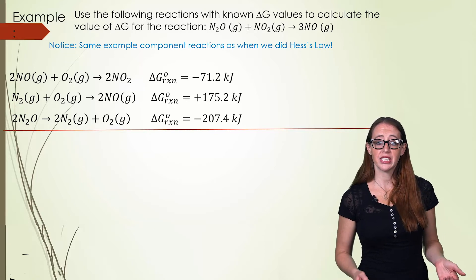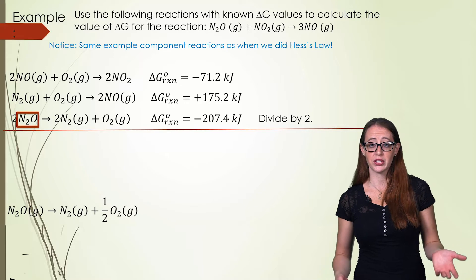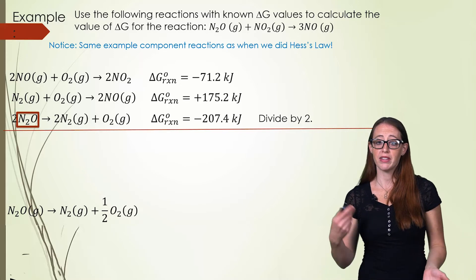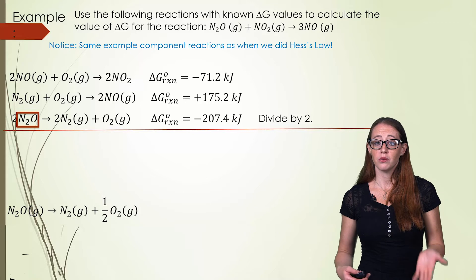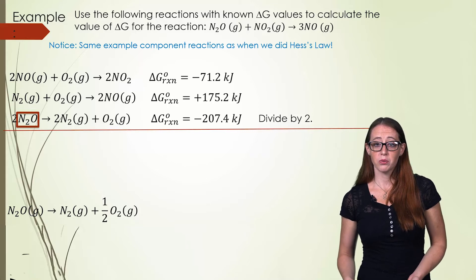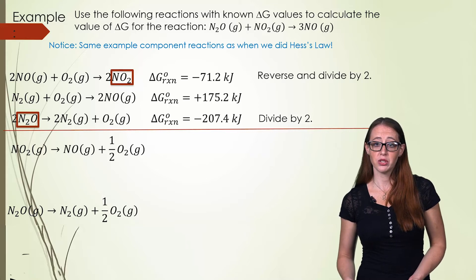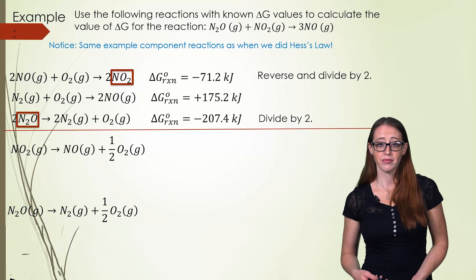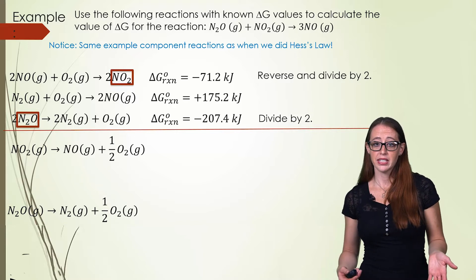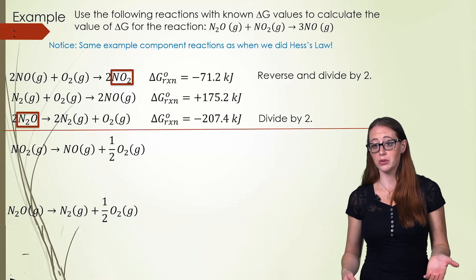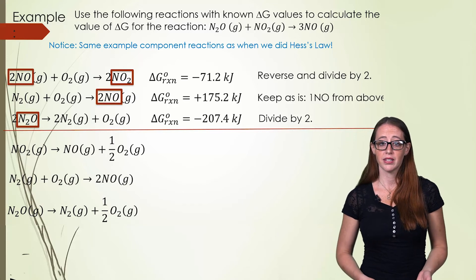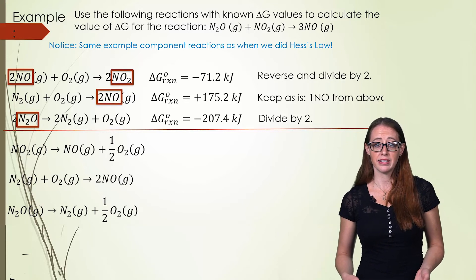So here we're once again going to notice that we have N2O on the correct side, but that there are two of them in the top and we only want one. So we're going to divide our reaction by two in order to get this. Now let's look at our NO2. It's on the wrong side and there are two when we really only need one. So we're going to need to reverse it and divide it by two.